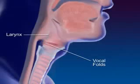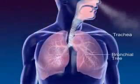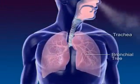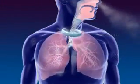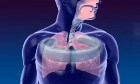The trachea, or windpipe, connects the larynx to the bronchial tree. The cartilage rings of the trachea prevent the trachea from collapsing.